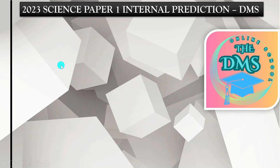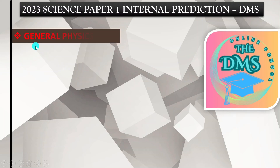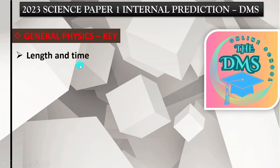We start with the first topic in science or physics, which is General Physics. It has been written in red with 'key' at the end of it, meaning this topic is a key topic in science paper one — it does not miss. The subtopics under here considered to be in the CSAS exam are: number one, length and time; and number two, mass and weight.